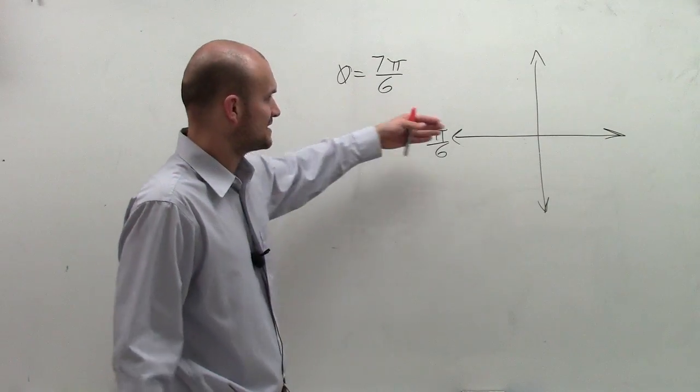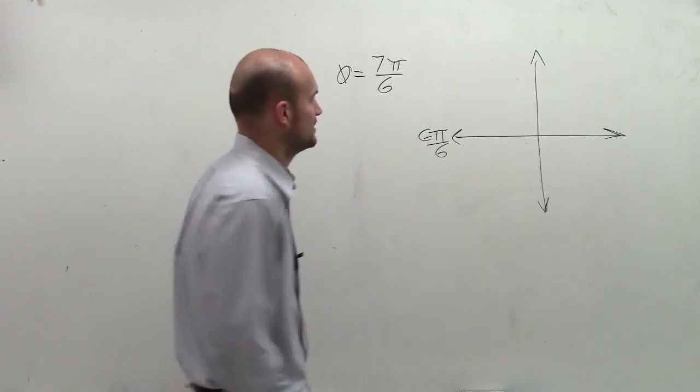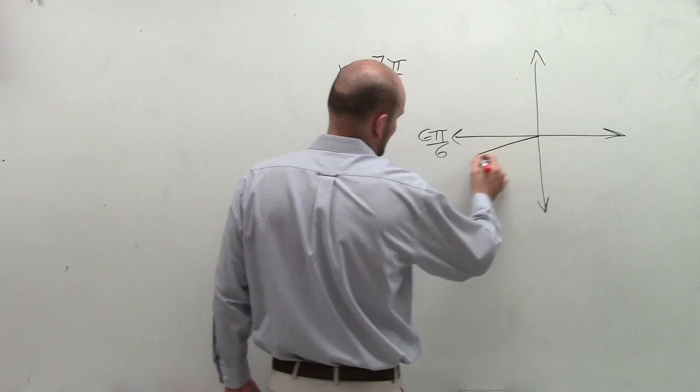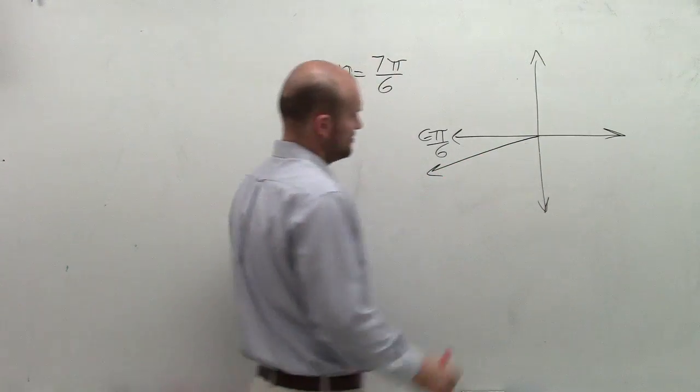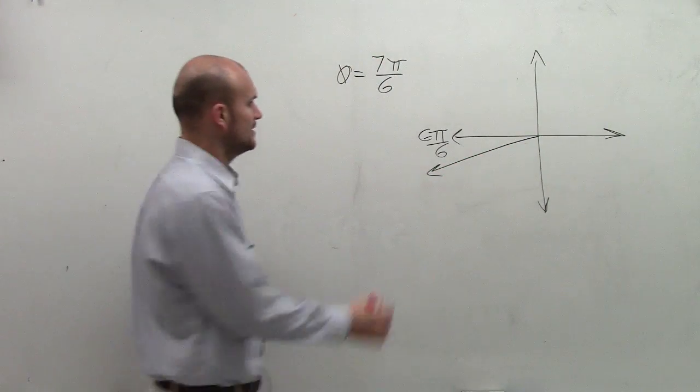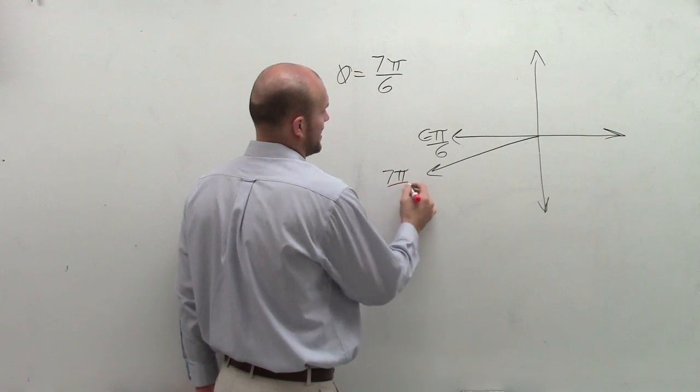So 7π over 6 is just going to be one more segment over, which I'm not going to get exact, but we could kind of roughly say is going to be right there. All right? So here's my angle, 7π over 6.